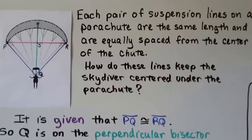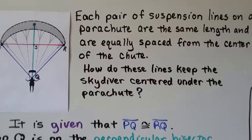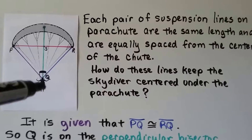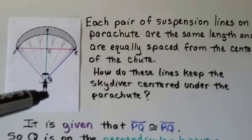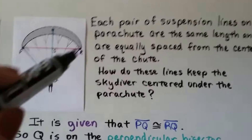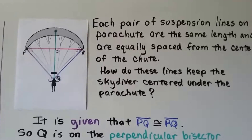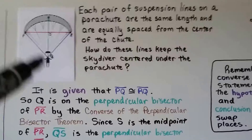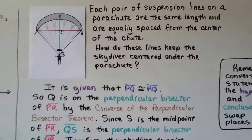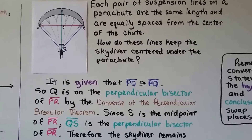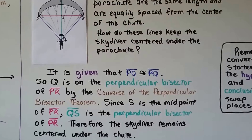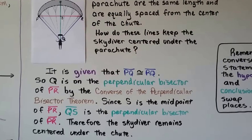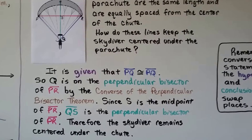Each pair of suspension lines on a parachute are the same length and are equally spaced from the center of the chute. How do these lines keep the skydiver centered under the parachute? SQ is our angle bisector, with Q being the skydiver's head where all the angles meet. Since segment PQ is congruent to RQ, Q is on the perpendicular bisector of segment PR by the converse of the perpendicular bisector theorem. Since S is the midpoint of PR, the green segment QS is the perpendicular bisector of the pink segment PR. Therefore, the skydiver remains centered under the chute.